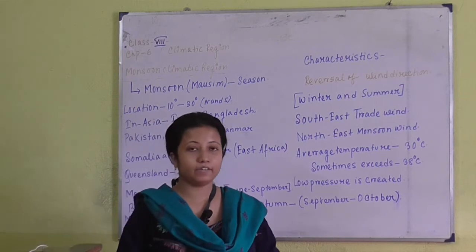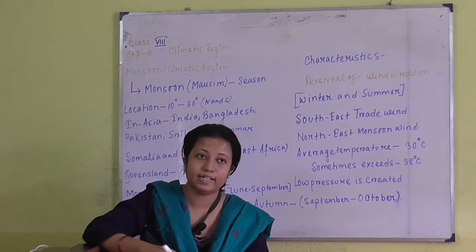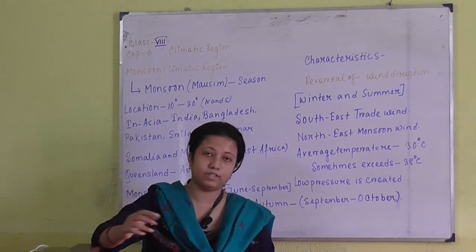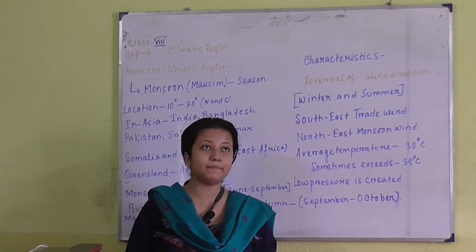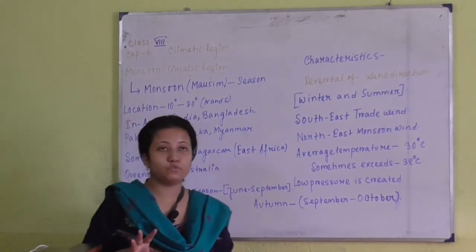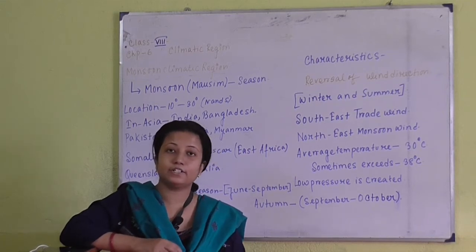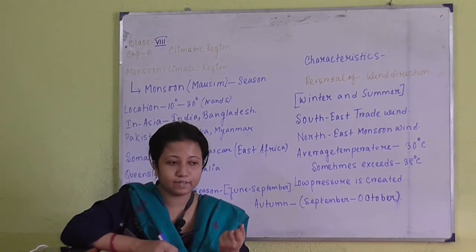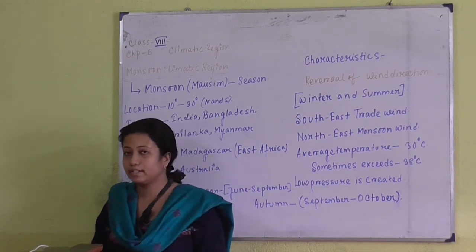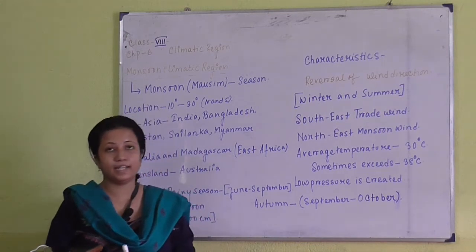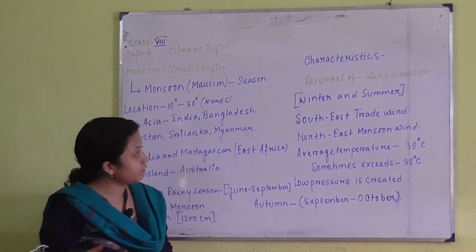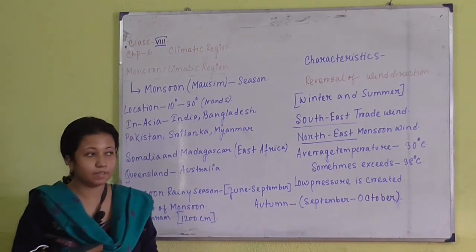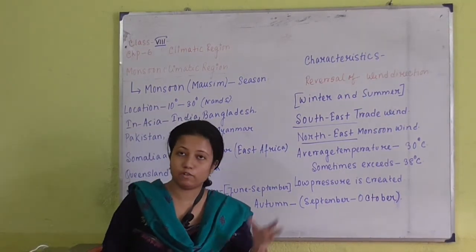Dividing this climate into different patterns, we get four distinctive seasons: summer, winter, monsoon and autumn. In the summer months, generally from March to June, the average temperature is 30 degree Celsius, which may exceed 38 degree Celsius, or in extreme conditions rise above 40 degree Celsius. It is very sultry in summer. Then follows the monsoon, with distinctive southeast and northeast monsoon winds which bring rainfall to those areas influenced by this type of climate.